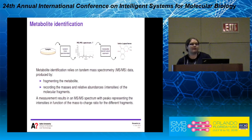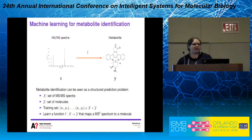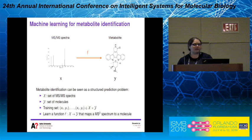Given this tandem mass spectra, we can use a metabolite identification approach to identify the molecular structure of the molecule. In this work, we decided to use a machine learning approach. We consider the input data as a set of tandem mass spectra, and as output we have a set of molecular structures. We consider a training set where we know both input and output, and the objective is to learn a function F that maps a tandem mass spectrum to a molecule.